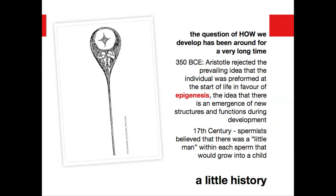A little history before we look at our research. This question of how we develop has been around for a very long time — it is a philosophical question that has garnered a lot of interest. In fact, in 350 BCE, Aristotle was one of the first people to reject the prevailing idea that the individual was preformed at the start of life, in favor of thinking about epigenesis, which means that development occurs through an emergence of new structures over time. Although what those structures were and how they emerged was something still being argued about.